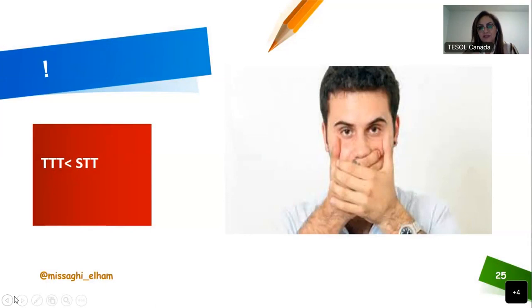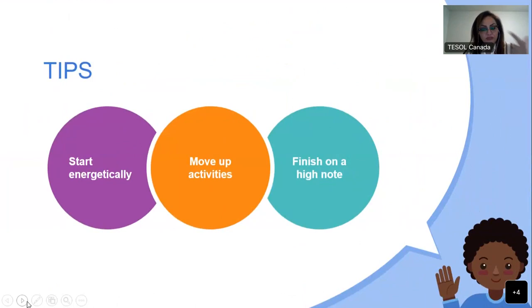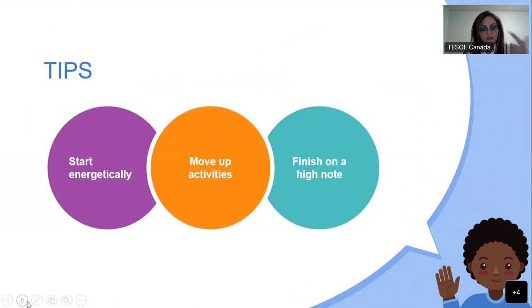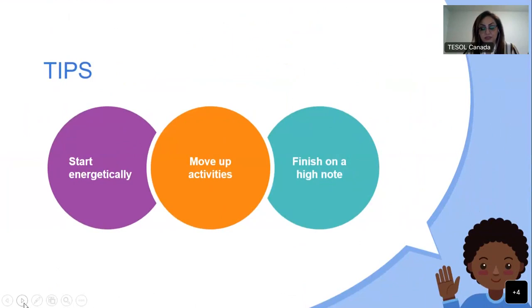One important thing in your online classes: ask your students to turn on their video camera, and keep asking questions. If they can't turn on their camera because of internet speed, they can type to you in the chat box. Don't talk too much — think about engaging students. Using breakout rooms works really well; having online games also helps. Start energetically, use move-up activities, and finish on a high note. For example, with primary students, singing a song at the beginning and end would be nice.